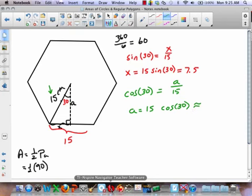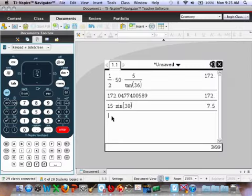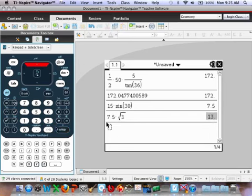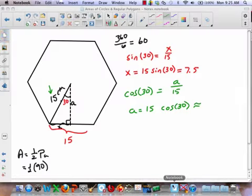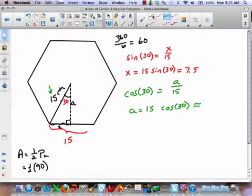Which, okay, that one I don't know, but I do know it's 7.5 times root 3. And that is, oh, that's not right. 12.99.